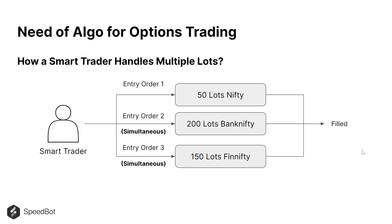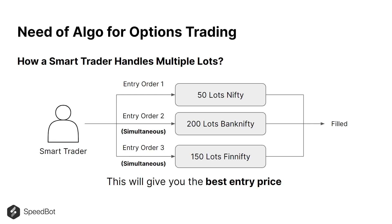As you can see, all the orders would get filled. This gives the smart trader the best entry price because the execution time is pretty low compared to what the manual trader was doing earlier. This is the key difference between the timely execution of a manual trader and a smart trader.